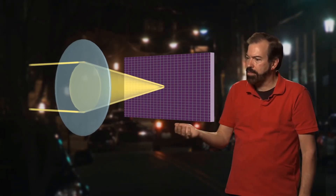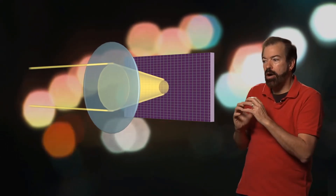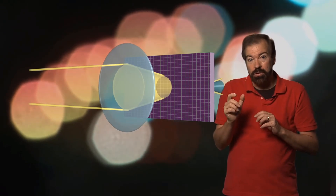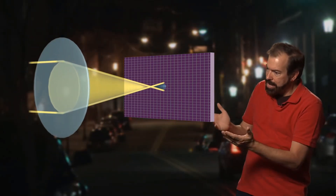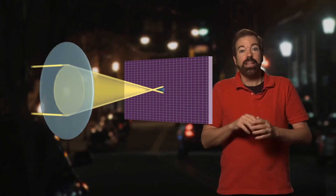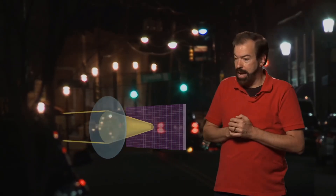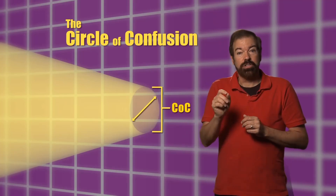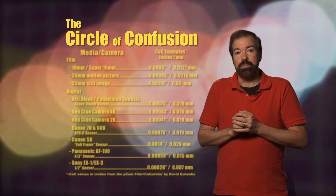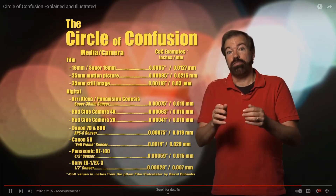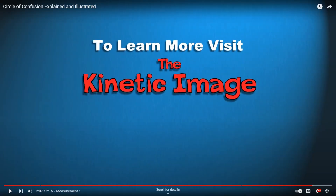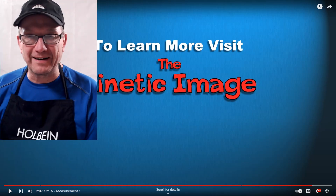As we rack through the focus, the point of convergence moves off the focal plane and we see a larger slice of the cone — the dot grows into a circle, very much like the street lights behind me right now. When you rack back the other direction, you pass through the focal point and get a circle again. The measurement of where a point of light grows to a circle you can see in the final image is called the circle of confusion, measured in fractions of a millimeter. That number is used to calculate depth of field tables.